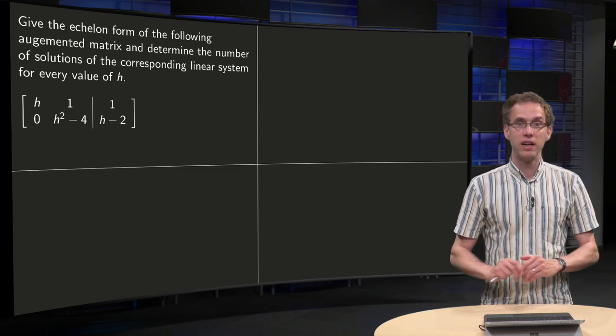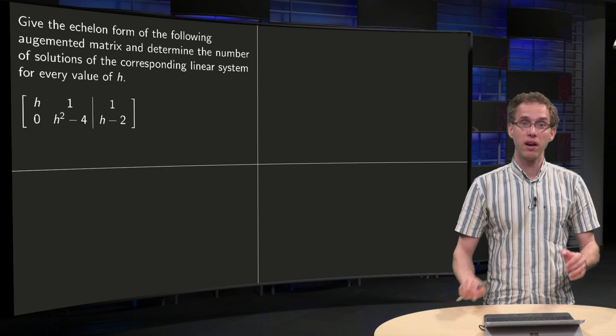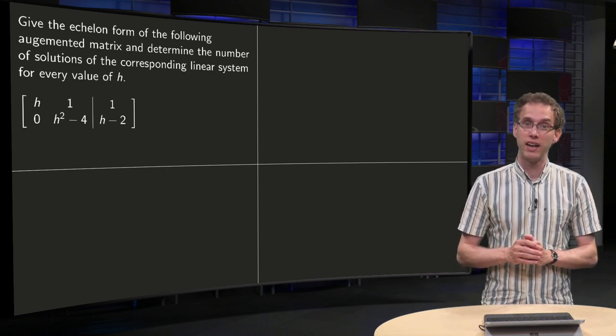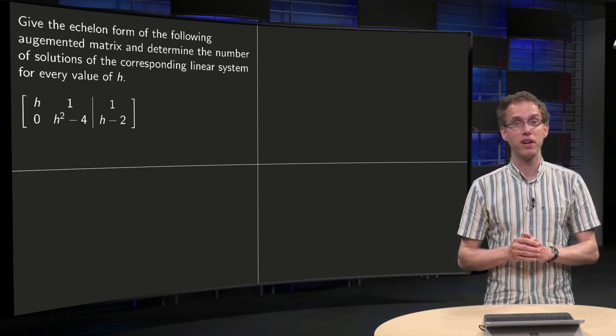Well, it looks like the augmented matrix is already an echelon form for all values of h.